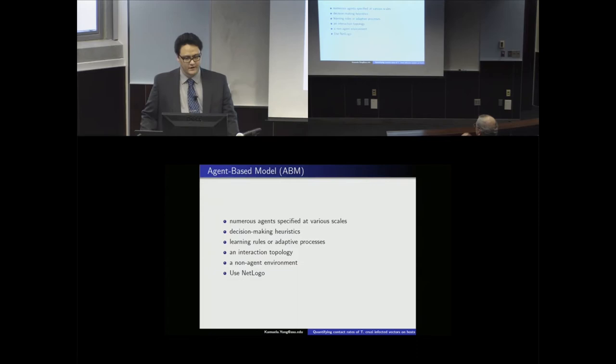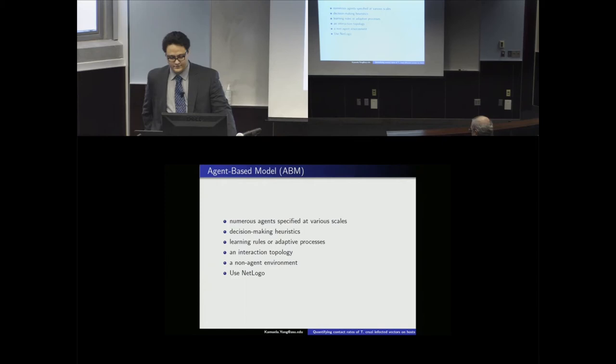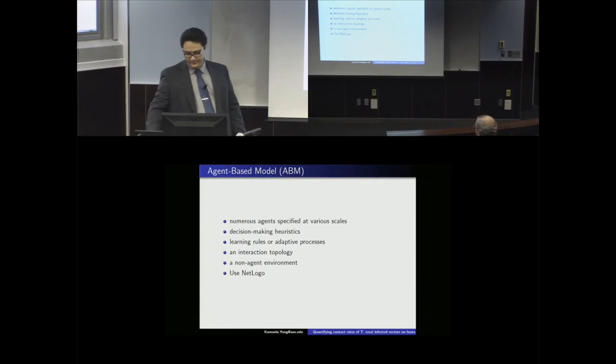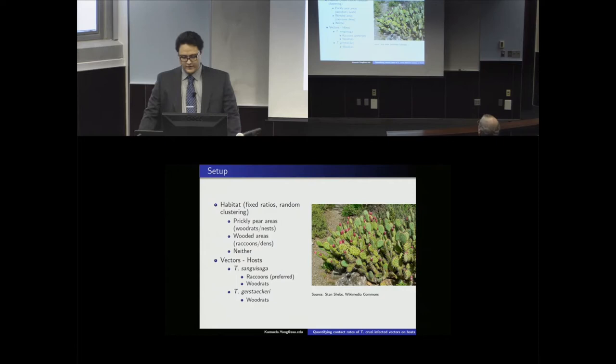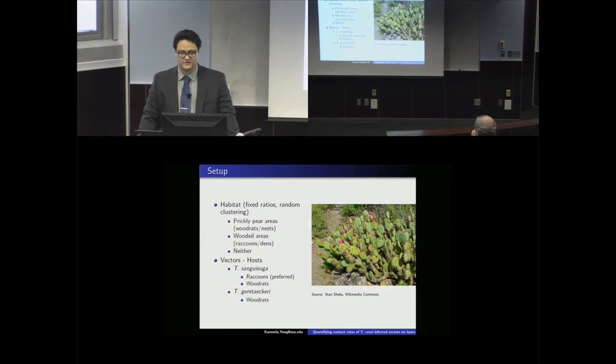We're using an agent-based model — also known as an individual-based model — implemented in NetLogo, where individuals or agents are the primary objects of study rather than whole populations. We set up three different habitat types: a prickly pear area (a desert-type environment where wood rats live and build nests), a wooded area where raccoons live in dens, and a third area that is neither.